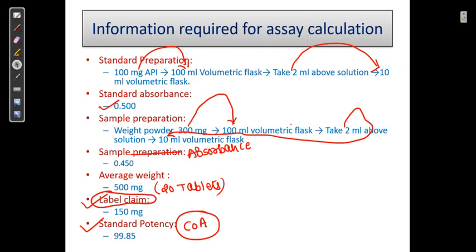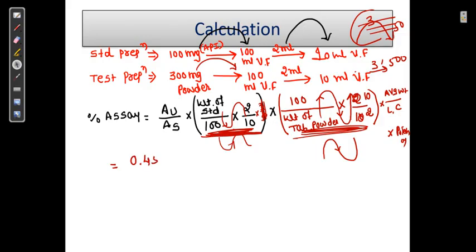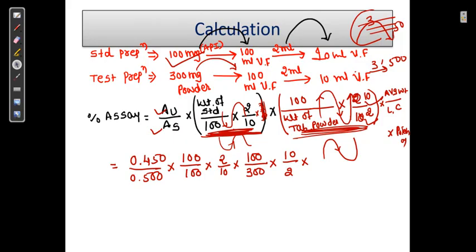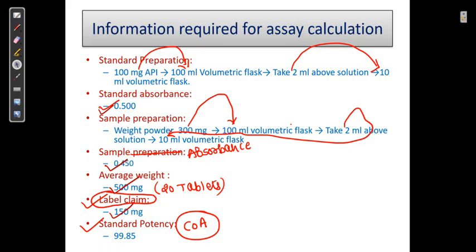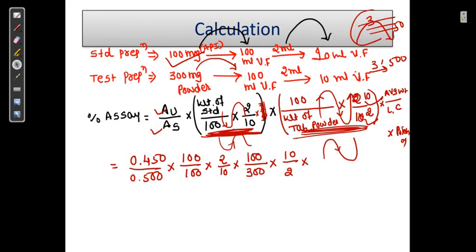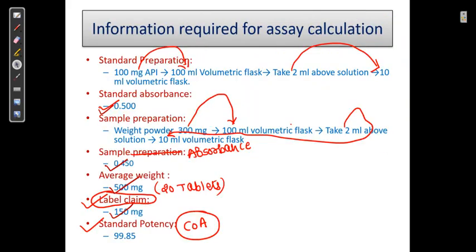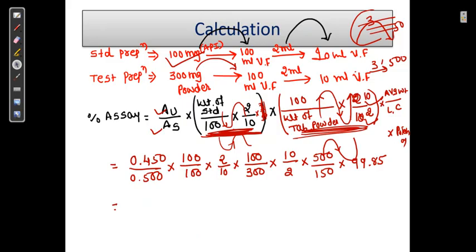Let us see. Absorbance of unknown is 0.45 and standard is 0.5. So 0.45 divided by 0.5, into weight of standard 100 mg, that is 100 divided by 100 into 2 divided by 10. Tablet powder weight is 300 mg into 100 into 10 divided by 2. The average weight is 500 mg, label claim is 150 into potency 99.85 from the certificate of analysis. After doing all calculations, you are getting the assay as around 99.84 percentage.